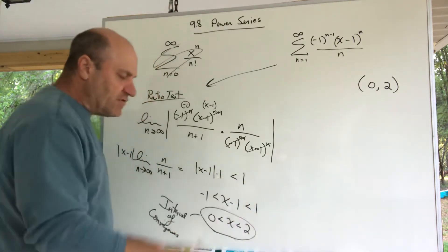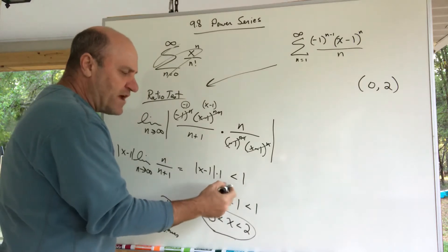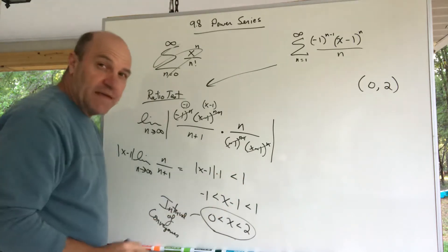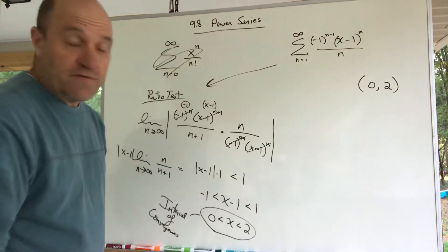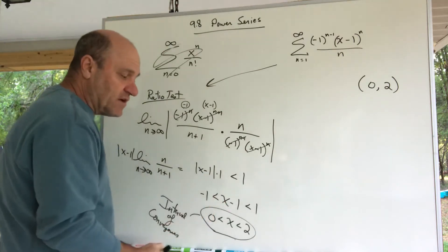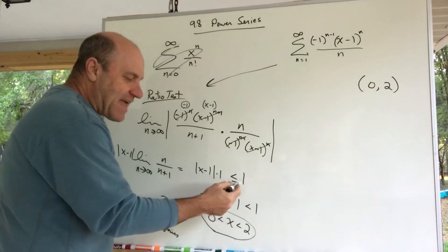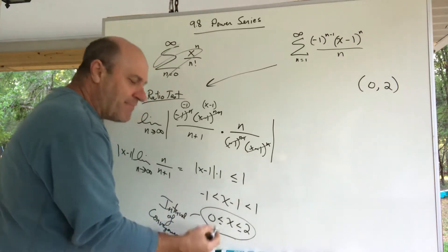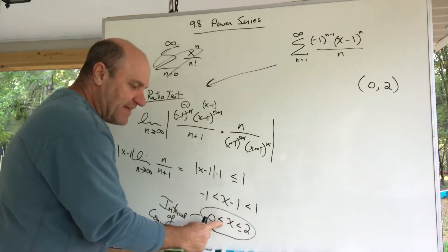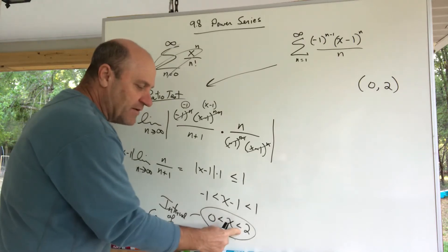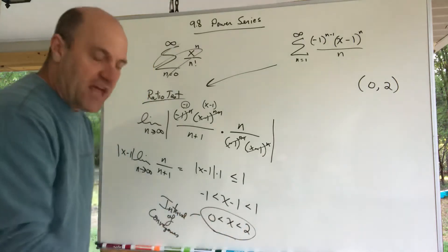You know, the ratio test—what happens when the ratio test equals 1? If you remember, it's inconclusive. When it equals 1, it's inconclusive. So if I had an equal to on here, I'm not sure what's happening at these endpoints. That's the inconclusive part. So I really should check each endpoint.